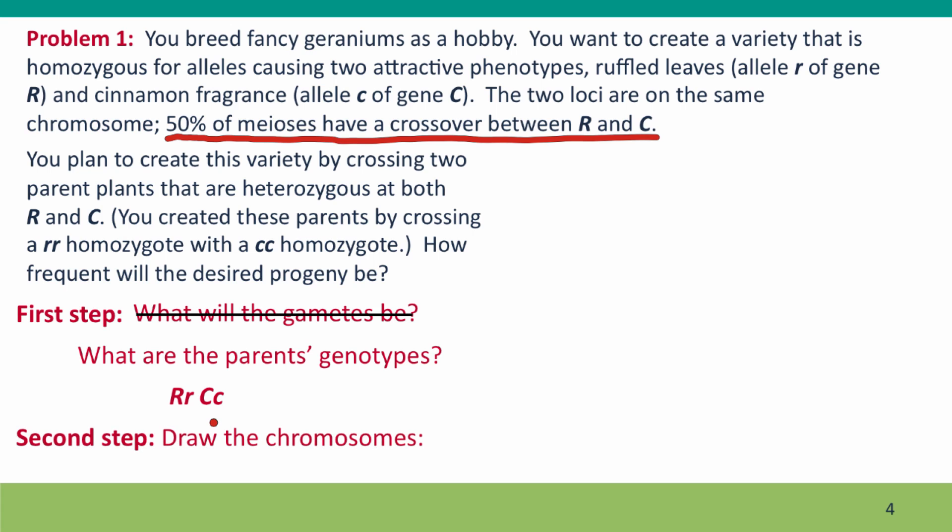The next step is to draw their chromosomes because we want to get to predicting what the gametes will be. And before we can do that, we need to know what chromosomes we're dealing with. And this is where a new wrinkle comes in because you're not told directly the parent's chromosomes. You have to infer them. You're told how the parents, the parents of this genotype, they were made by crossing a parent with this genotype.